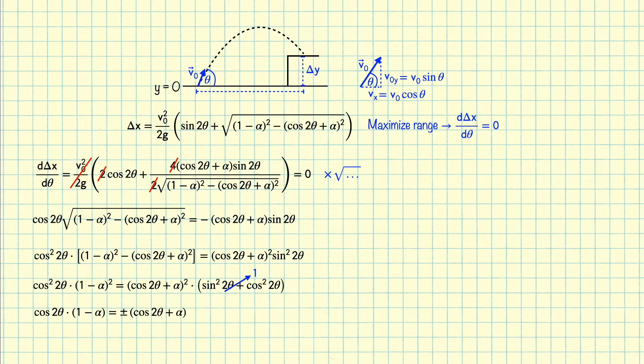One of these will be the maximum, and the other one will be the minimum. Now we know that the minimum corresponds to theta equals 90 degrees. Plugging in theta equals 90 degrees into this equation reveals that this corresponds to the plus solution, therefore the maximum corresponds to the minus solution.